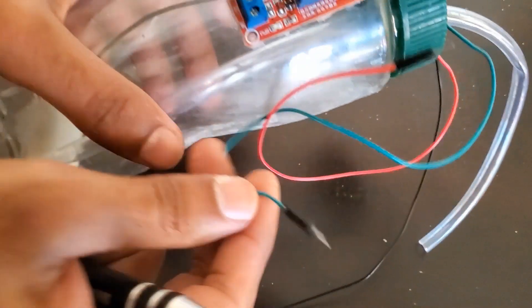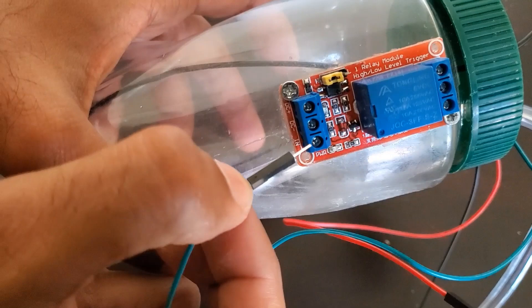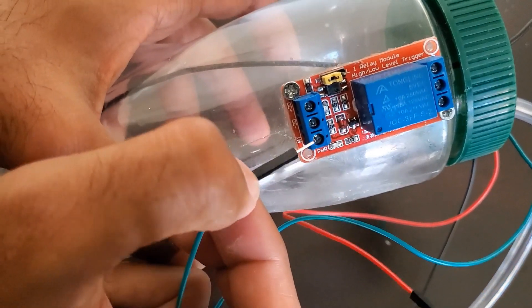The next step is to wire the green wire from the output of the sensor to the input of the relay module.